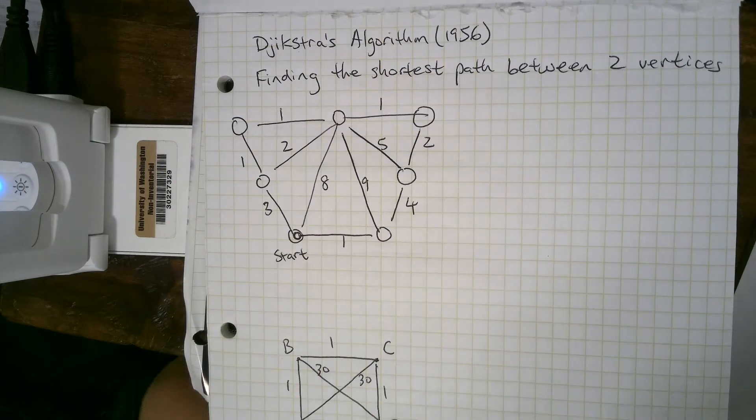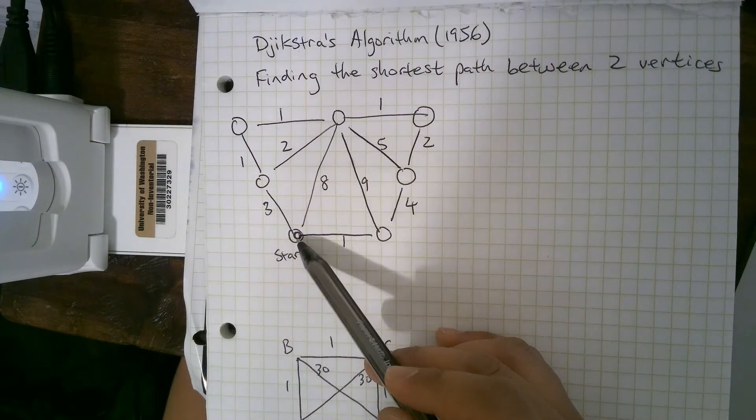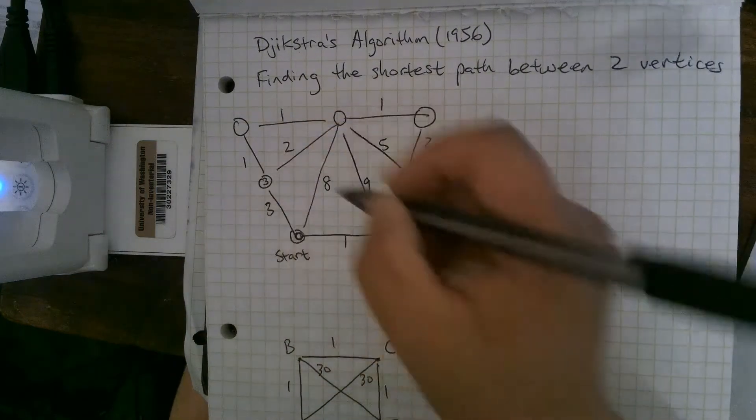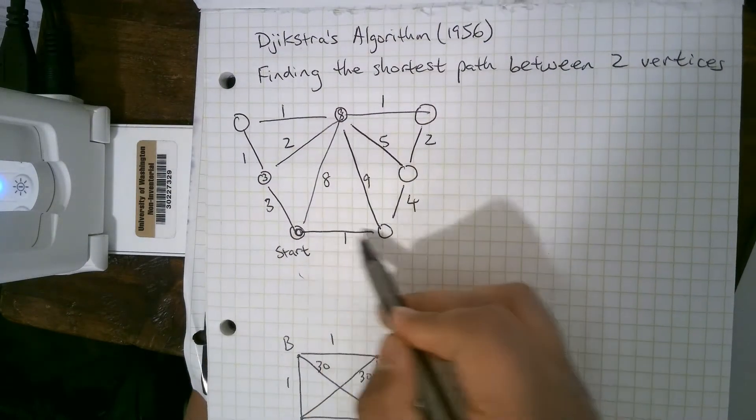Then we'll just travel along one edge, and we'll fill in the current shortest path from the starting vertex to any edge that we can get to. So this current shortest path is 3. So far, if we only travel along one edge, the current shortest path is 8 there, and this one is 1.